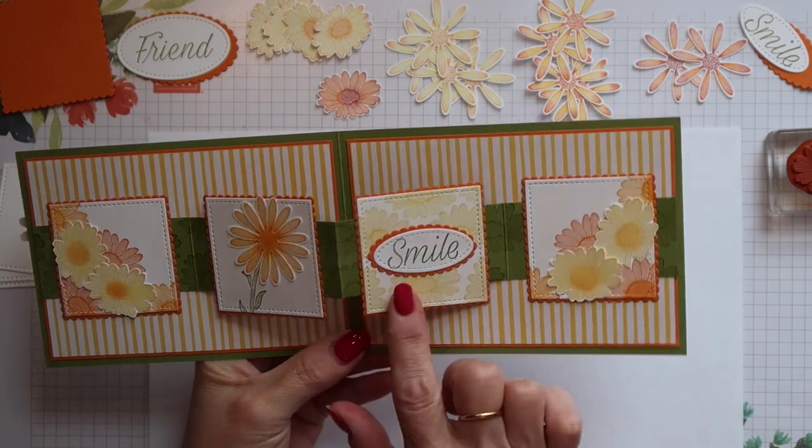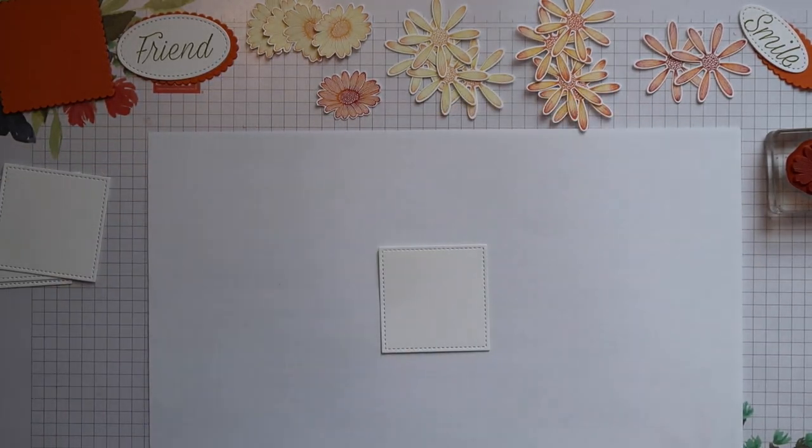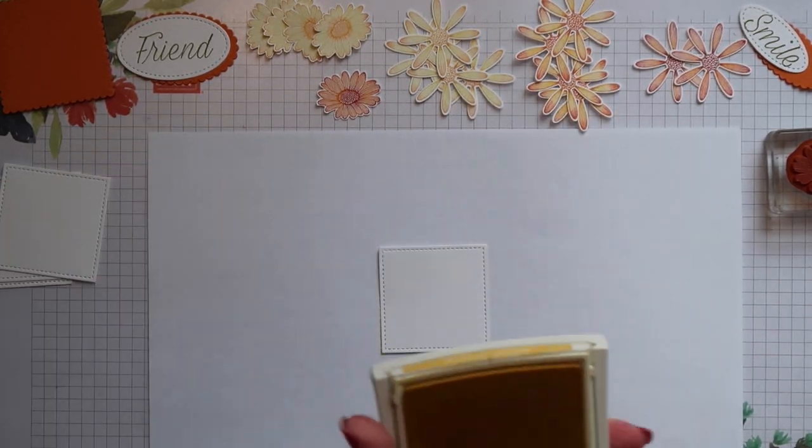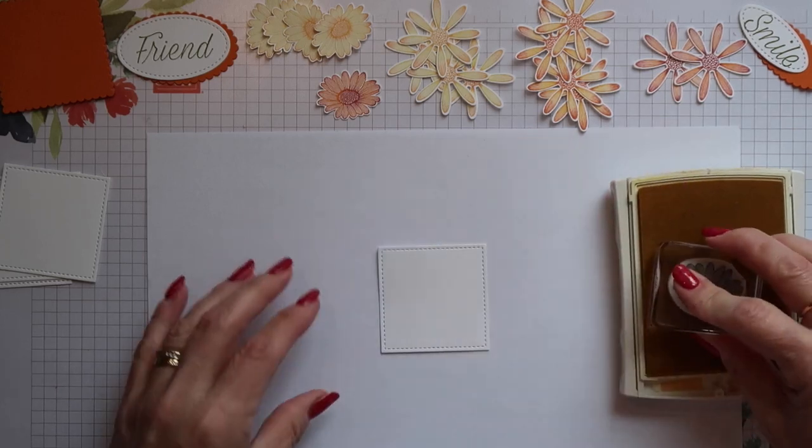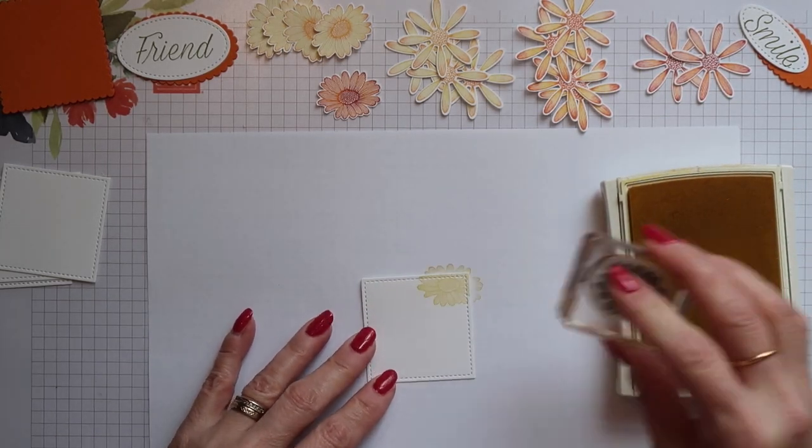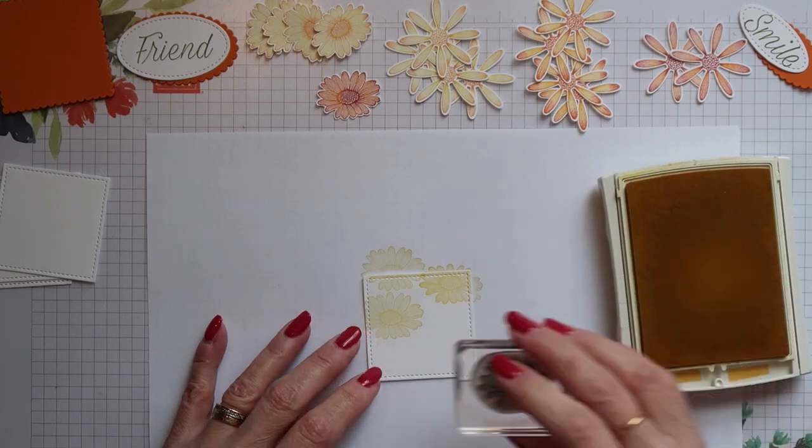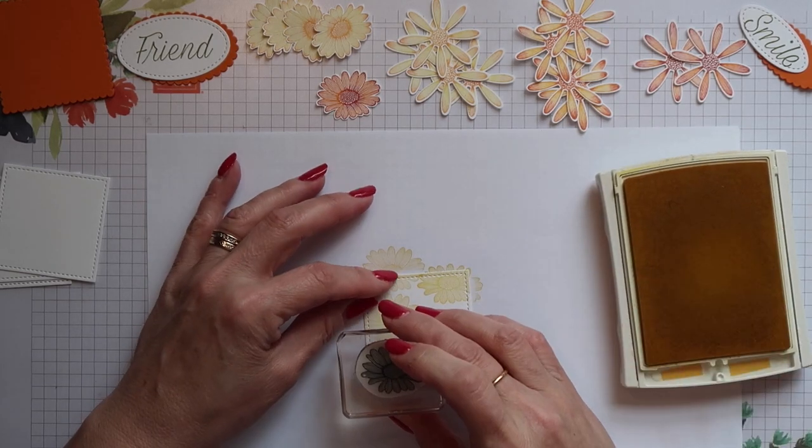I'm going to do the stamping for the panels next. I'm starting with the one under the sentiment. I'm using Daffodil Delight ink and the small daisy stamp and I'm just randomly stamping it all over this first panel.